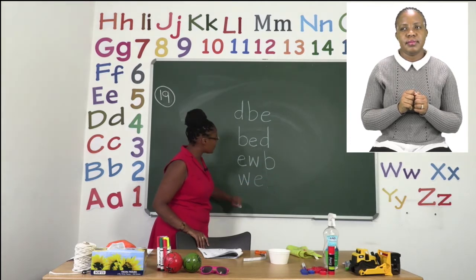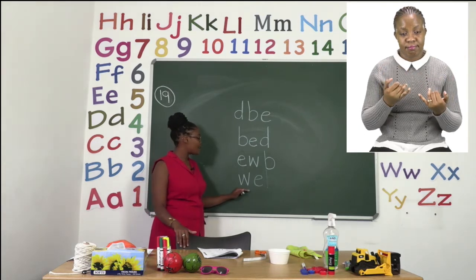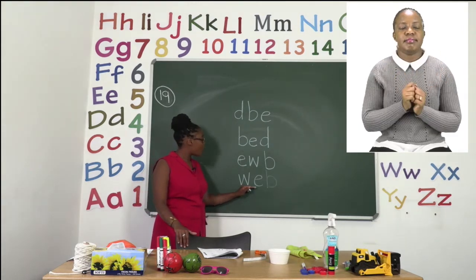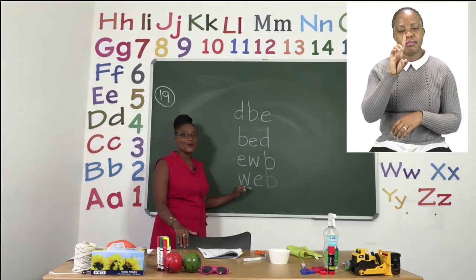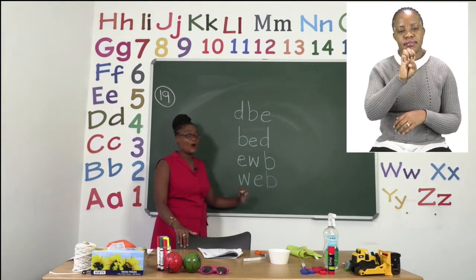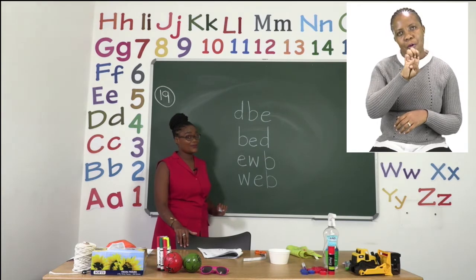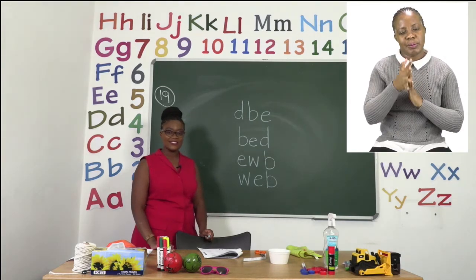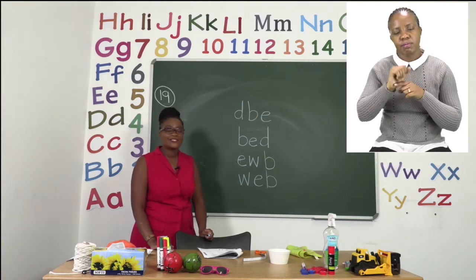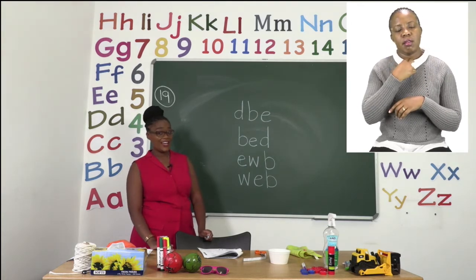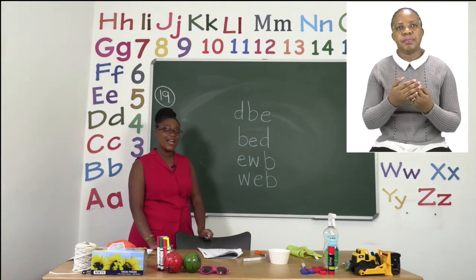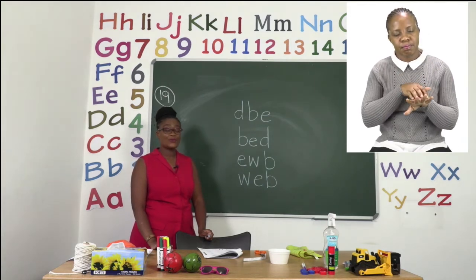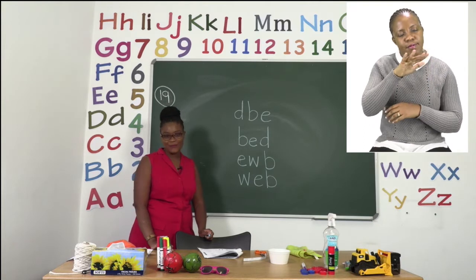Now we have our word web. Remember, you can always check by sounding it: W, E, B — web. If you get confused, you can always ask for help, but I know you are clever boys and girls. I am going to leave you to do the rest by yourselves. Take your time, have fun, and sound out the words before you unscramble them.